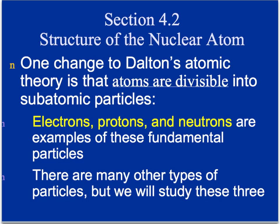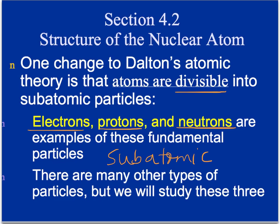From the last section, we talked about Dalton, who was the first to come up with the more modern atomic theory. As we learned more about the atom, we found we needed to make some changes. The key change to Dalton's atomic theory is that atoms are divisible into subatomic particles — he said they were not divisible, but we now know they can be divided into electrons, protons, and neutrons. These are examples of fundamental or subatomic particles. There are also other types, like quarks, but we won't study those in this class.